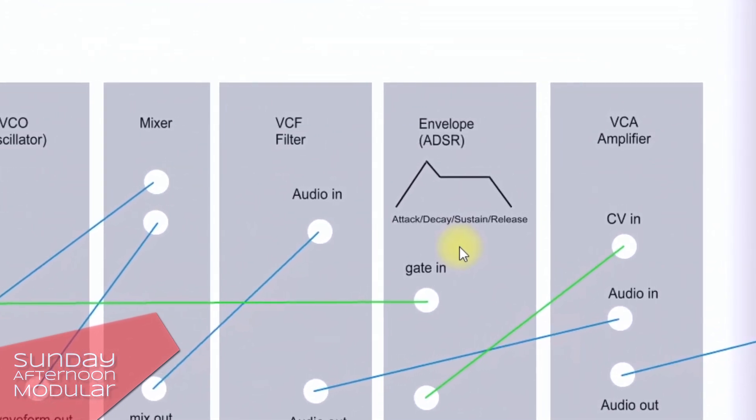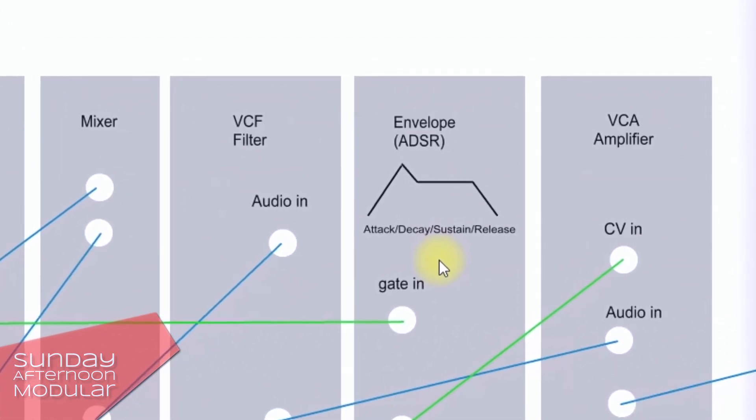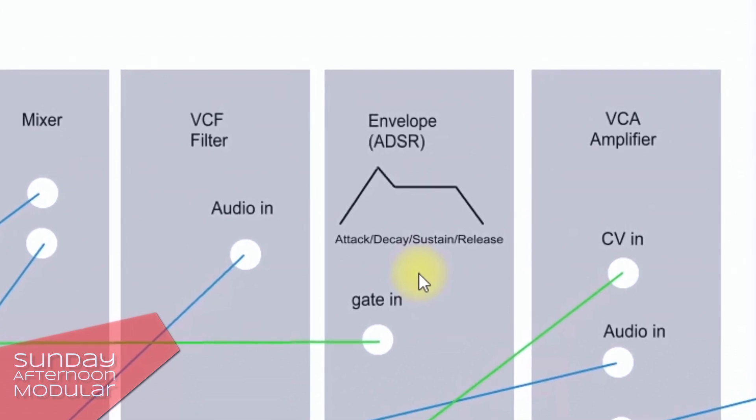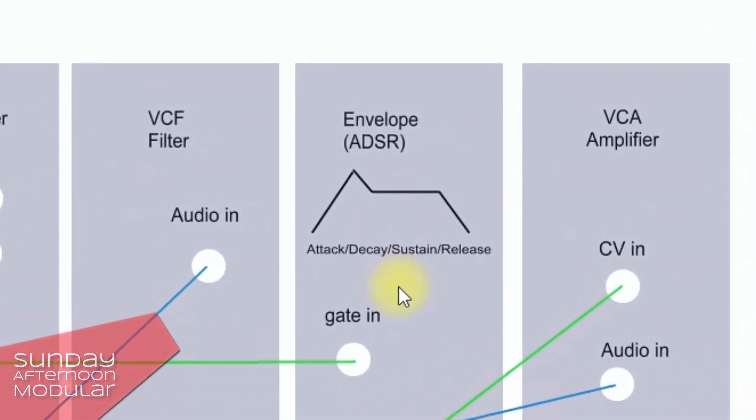Sustain sets the voltage level that is kept as long as I hold down the key on my MIDI keyboard. And release sets the time it needs to sink from the sustain level to zero so when I stop pressing the key of the MIDI keyboard.